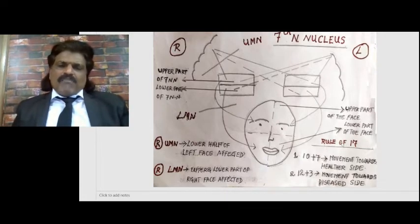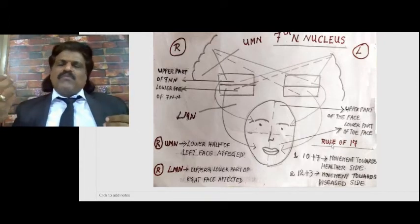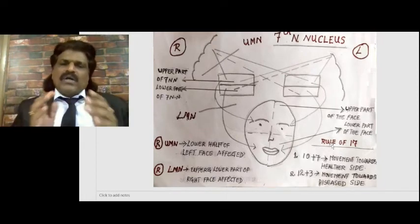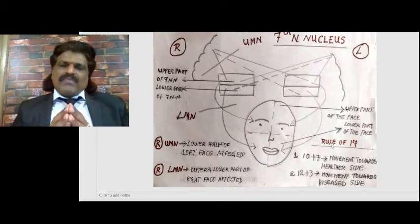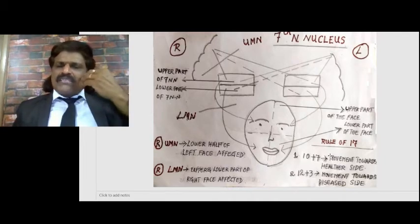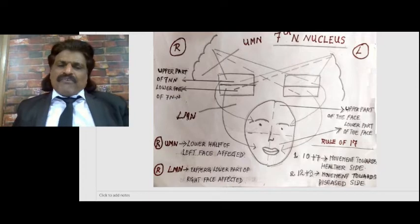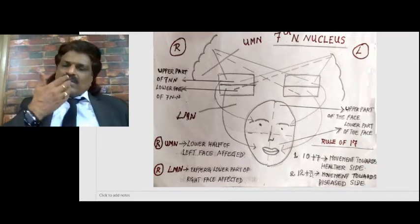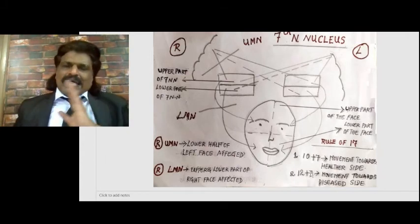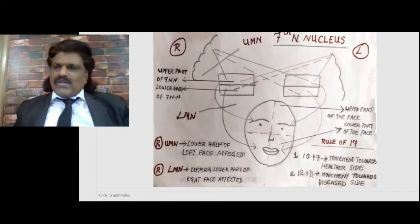Now the rule of 17. Because the 7th nerve gets affected and the 10th nerve gets affected there will be movement, and the 5th nerve gets affected and the 12th nerve gets affected there will be movement. Easy to remember: 12 plus 5 is 17, and 10 plus 7 is also 17. If the 10th and 7th nerves get affected, the movement will be towards the healthier side (palate and angle of mouth move to healthier side). Whereas if 12th and 5th nerves get affected, the movement will be towards the diseased side. 12th nerve is genioglossus - tongue.